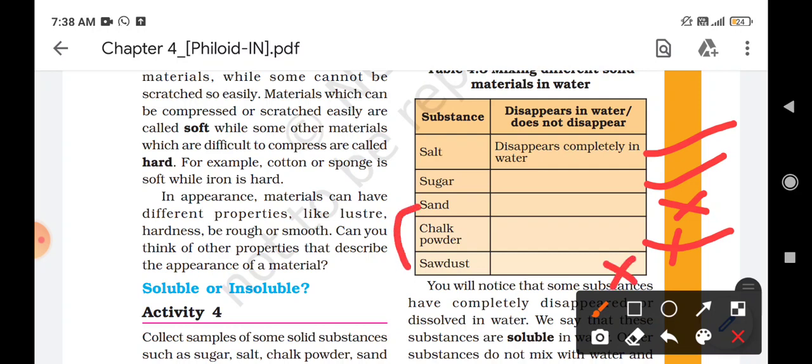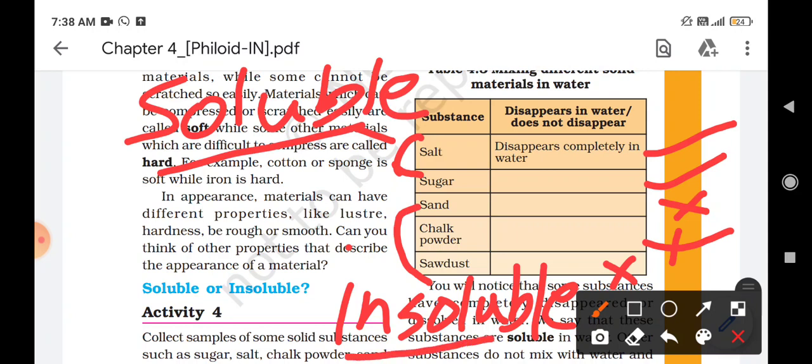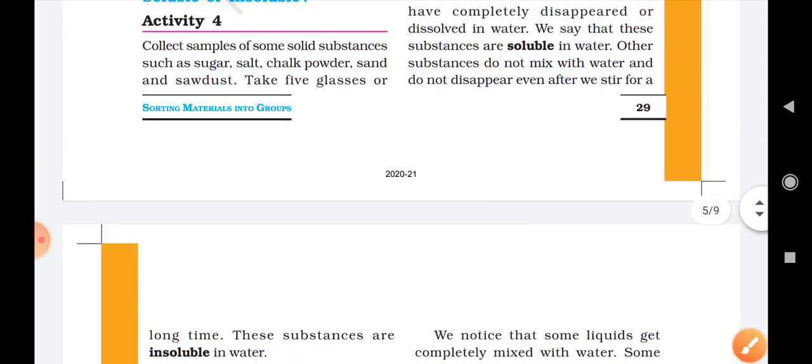So these three substances are insoluble substances. And these two are soluble substances because they can dissolve in water. So the substances which can dissolve in water are known as soluble substances. And the substances which cannot dissolve in water are known as insoluble substances. I hope this much is clear to you.